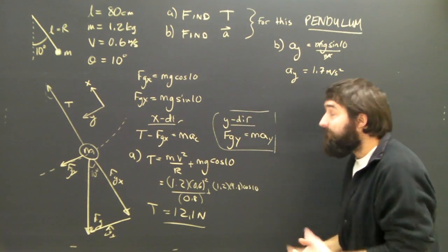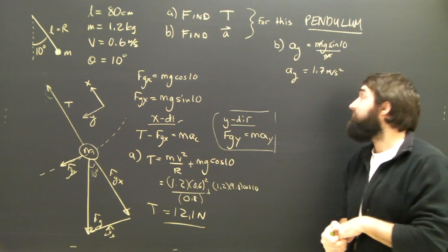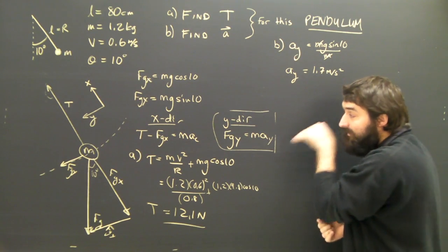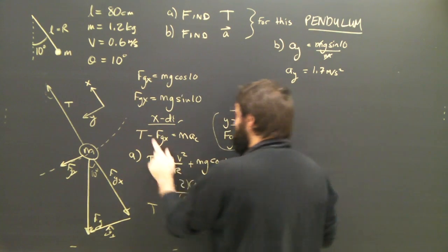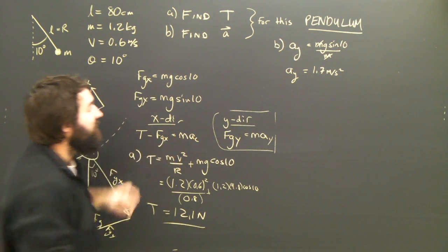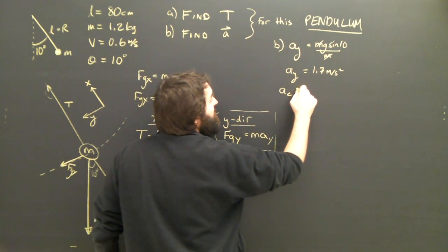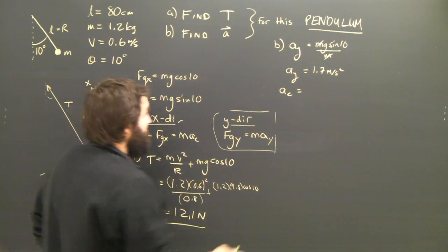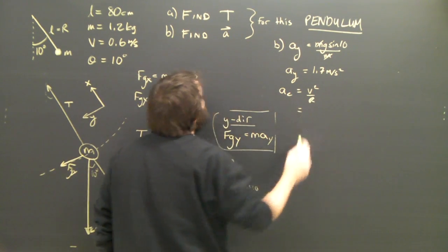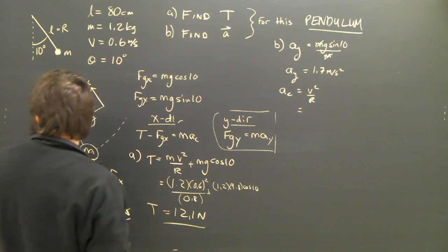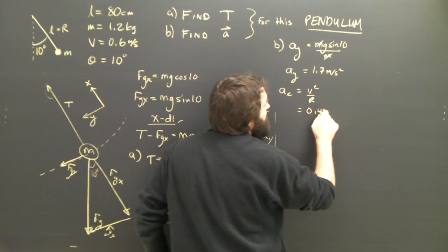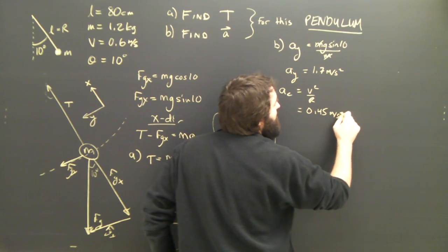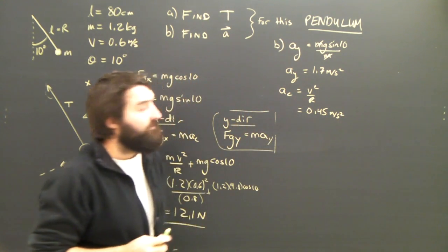If this was a test question, some of the students will say, okay, so the acceleration is 1.7, but that is only the y, the tangential component of the acceleration. There's also the centripetal acceleration, ac, which we never actually worked out, but we need to work out. We said it was v squared over r, so that's 0.6 squared divided by 0.8, and that works out to be 0.45 meters per second squared.